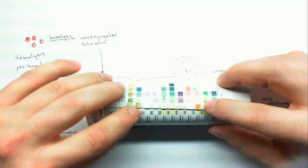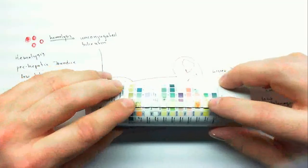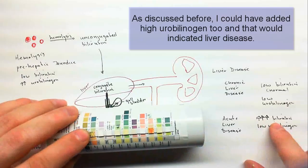The last strip I have, I'm trying to just color in that this is not a low pH. This high bilirubin would indicate acute liver disease.